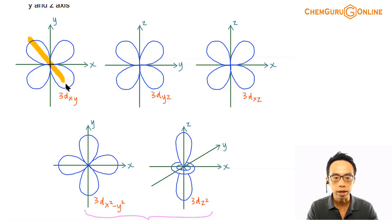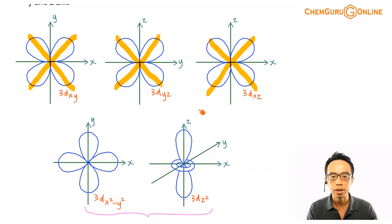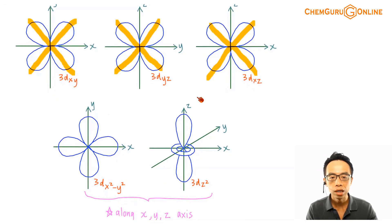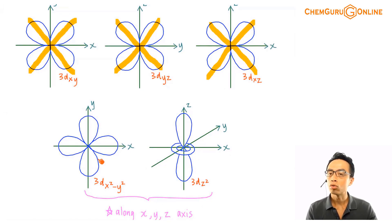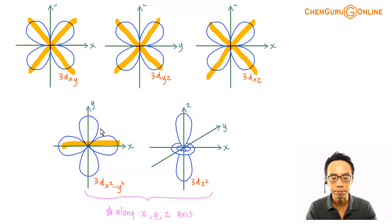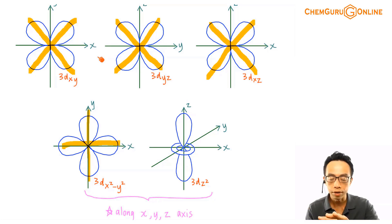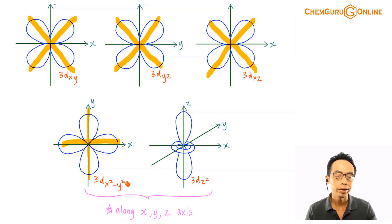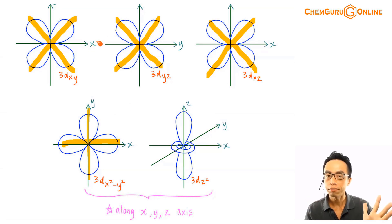This butterfly loop or cloverleaf-shaped d orbital lies along the xy plane. My dyz lies along the yz plane, and my dxz lies along the xz plane. So basically it's this butterfly shape lying along different planes. Now if I compare this with the fourth d orbital — dx squared minus y squared — it is also a butterfly. The shape is exactly the same as all these other guys. But instead of an x-shape, what you do is rotate it 45 degrees clockwise or counterclockwise, and it becomes a plus sign, lying directly along the xy plane.